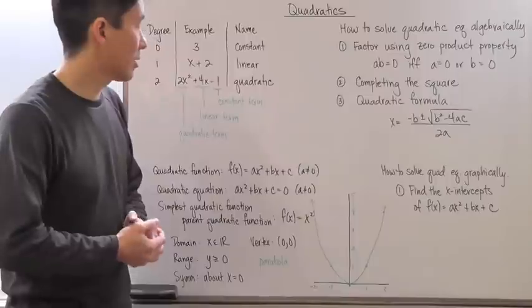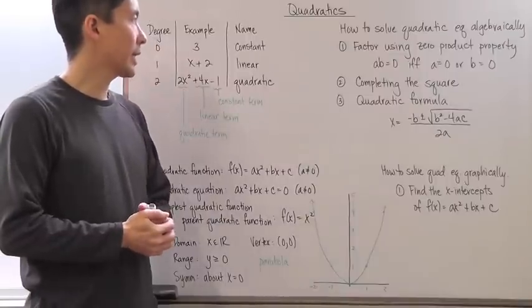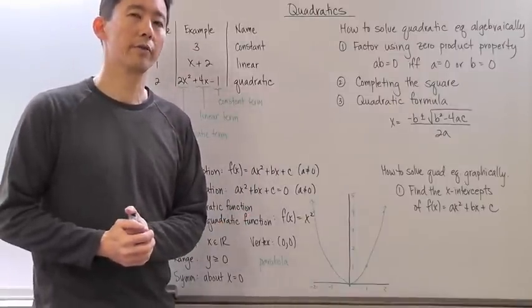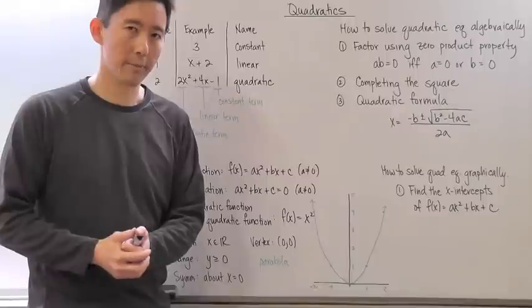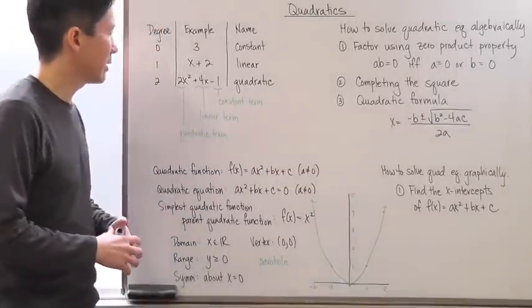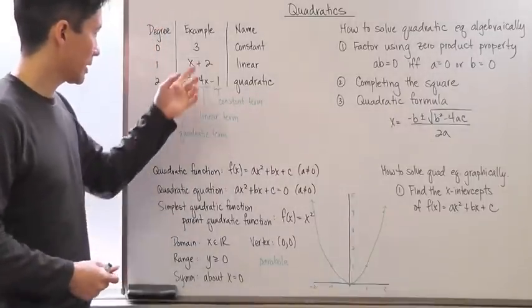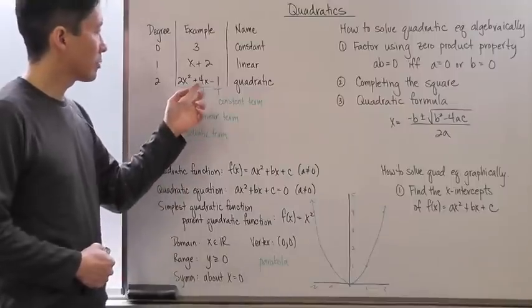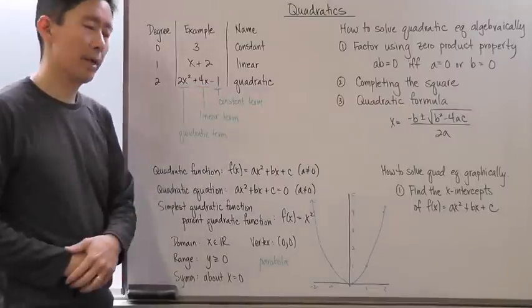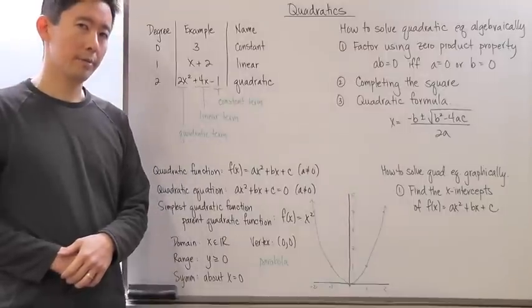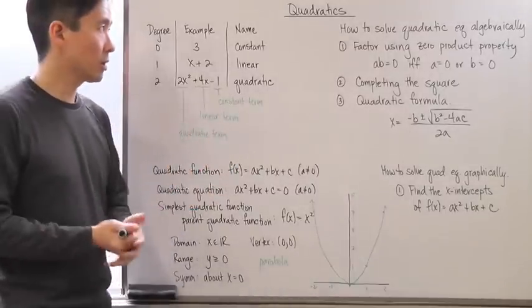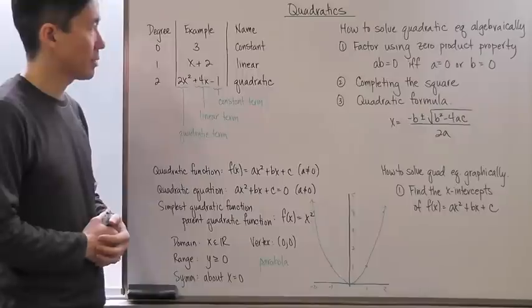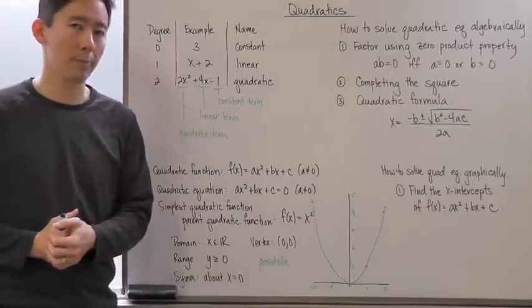Hello everyone, let's go ahead and start off with quadratics. Now what is a quadratic? Well, we have to first look at what polynomials are. We're already familiar with some polynomials like 3x plus 2 and 2x squared plus 4x minus 1. And we're going to put the quadratics in a particular frame of reference with regards to the polynomial and the degree of the polynomial.